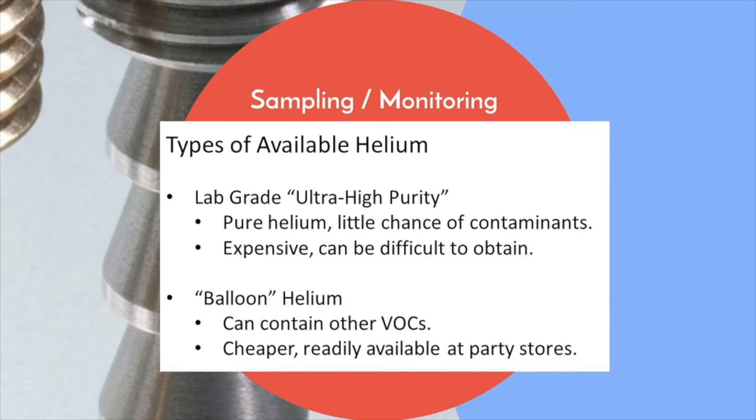Generally, the two types of helium that are available for use are lab-grade helium and so-called balloon helium. Lab-grade helium is extremely pure, ensuring that should a leak occur, the sample will not be compromised. However, it can be expensive and difficult to obtain. Balloon-quality helium is often found at stores for consumer use and may contain other volatile organic compounds. If a leak occurs, these VOCs can contaminate the sample or affect reporting limits. While it is easier to obtain, it can jeopardize sample integrity.